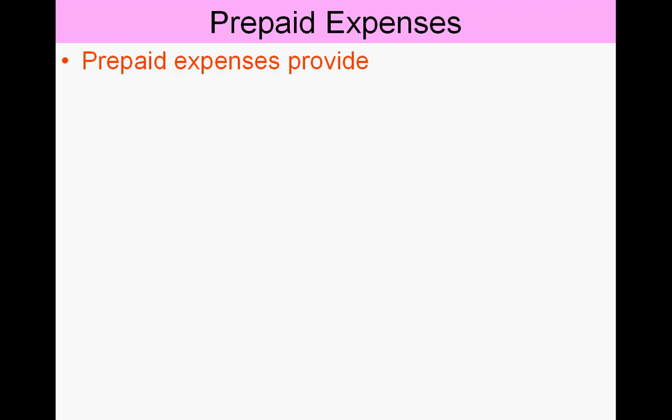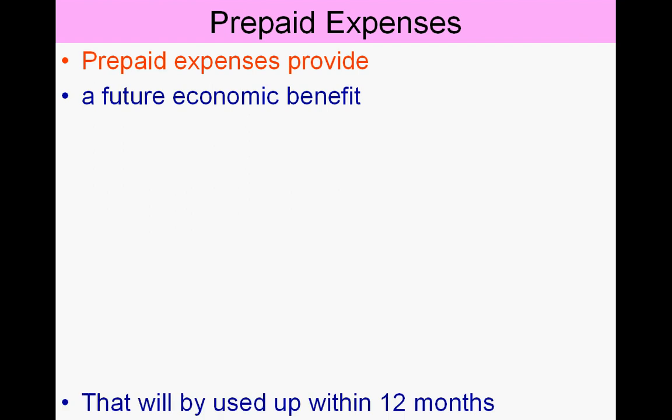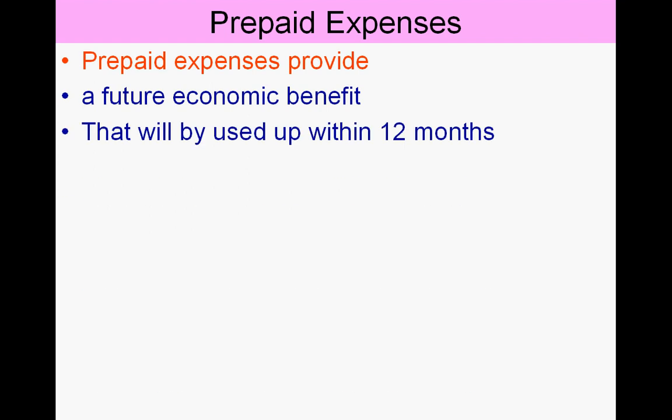Some key points on the theory behind prepaid expenses: a prepaid expense by its nature provides a future economic benefit that will be used up within 12 months. For instance, when we prepay rent for a year in advance, our benefit is that we get to occupy that space for a full year.